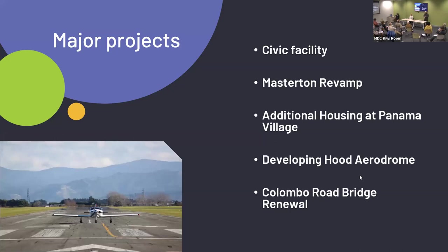The current council has set up a number of major projects in different areas of progress. Those are still planned in our long term plan, but how we actually land all those will be very much controlled by the next council. The top one is a civic facility — the master revamp, with a very much an intention to improve the CBD. There's a 12-year program being developed to do that, kicking off in this next triennium, improving first the CBD and also the entranceways.